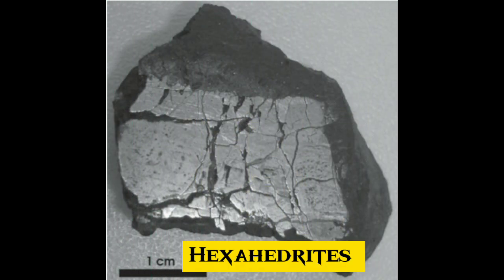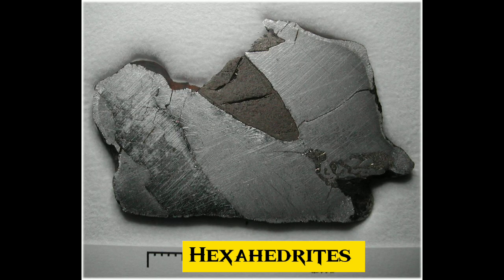12. Hexahedrites are a structural class of iron meteorite. They are composed almost exclusively of the nickel-iron alloy kamacite and are lower in nickel content than the octahedrites. The nickel concentration in hexahedrites is always below 5.8% and only rarely below 5.3%.